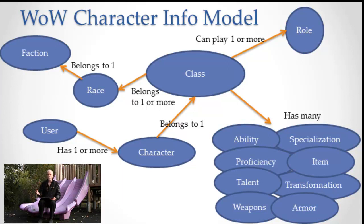There's a kind of information called role and a kind of information called class, and they're related: a class can play one or more roles. A class also belongs to one or more races — so a class can belong to a single race or more than one race. Furthermore, a race belongs to one faction. So how many factions can a class belong to? More than one. If a class belongs to two races and each race belongs to a different faction, then in effect the class belongs to one or more factions. So faction, race, and class define a hierarchy: at the top is faction, under factions are races, and under races are classes.